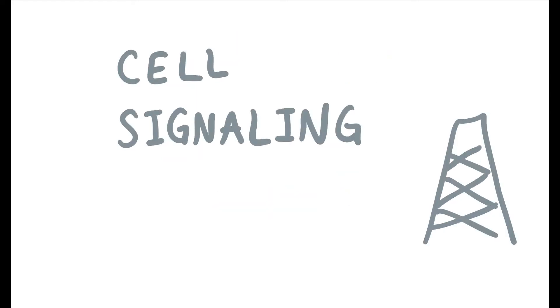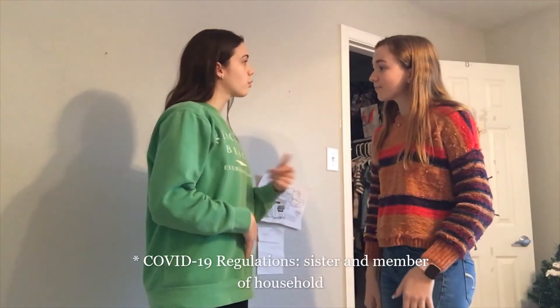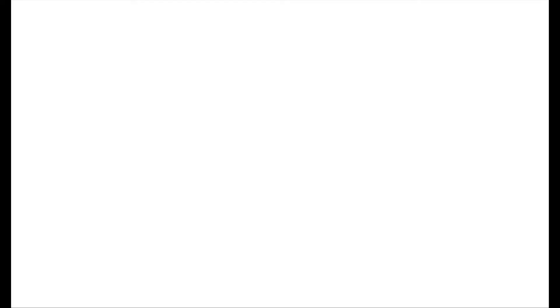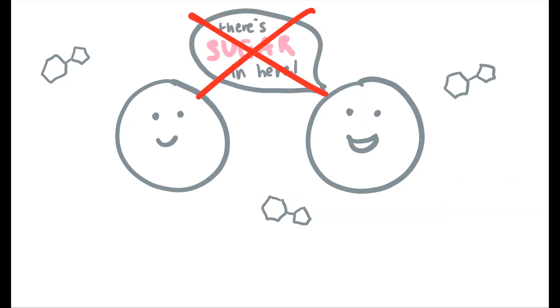First, we need to define a term called cell signaling. Think of how as humans, we need to communicate with one another. Much like us, cells need a method of communication, especially when there are changes in their environment. Because they can't talk to one another, they must communicate another way. This is what scientists refer to as cell signaling.